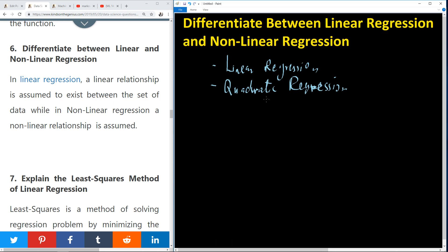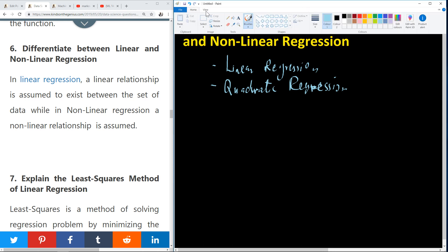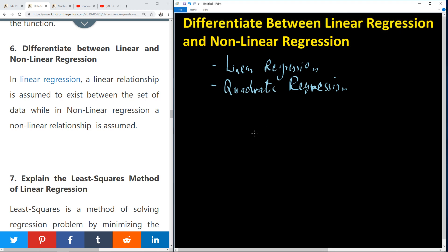All right. So, in case of linear regression, we are talking about a linear relationship given the data set. So if we have a data set plotted on a graph, we have this data set plotted on a graph.